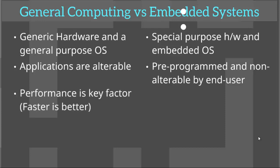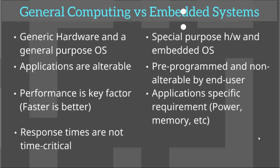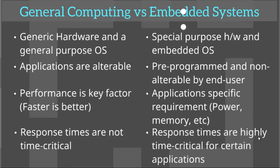Performance is a key factor for general computing systems, which translates to faster is better. Over the years we have seen computer CPUs going faster and faster, from a few megahertz to now gigahertz. On the other hand, embedded systems performance is application specific — some may have power consumption as a primary requirement especially for battery powered applications, others may require limited memory. In general computing systems, response times aren't time critical; resources are shared and response times aren't deterministic. Embedded systems, however, many of them work on a deterministic time frame, and many applications are time critical.